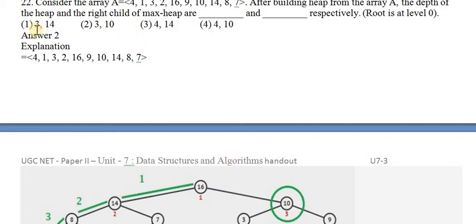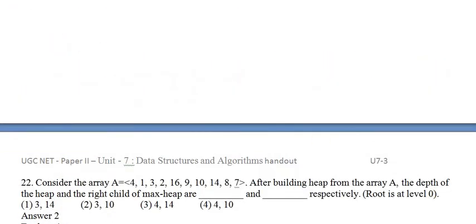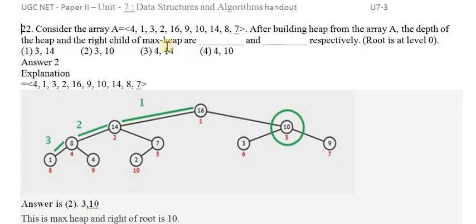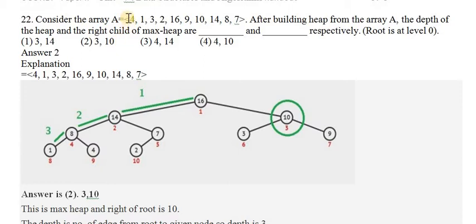Next question: consider the array with elements 4, 1, 3, 2, 16, 9, 10, 14, 8, 7. After building a heap from the array, the depth of the heap and the right child of the root for the max heap are being asked. We place 4 here, then 1 here — 1 is less than 4, no issue. Again, 3 is coming, I am placing 3 here. 3 is less than 4, no issue.